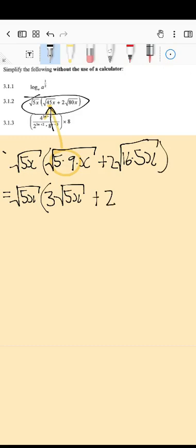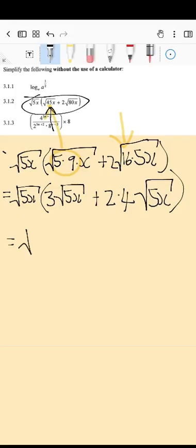The square root of your 16, so the 16 square root of that is going to be a 4. So that 4 is going to multiply with the 2 that's outside, and then you have your square root of 5x that still remains.